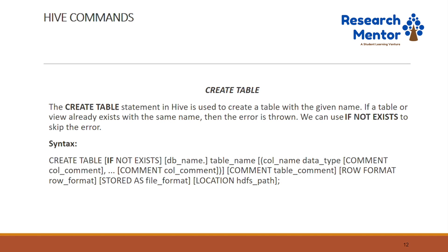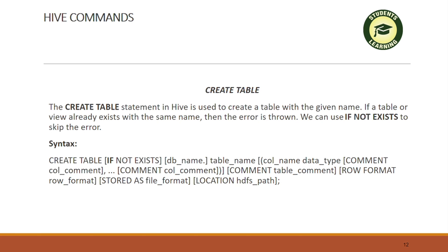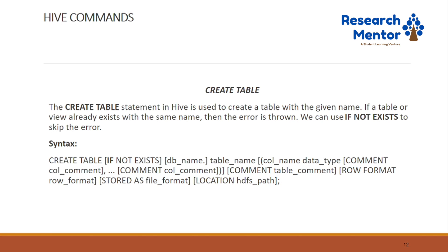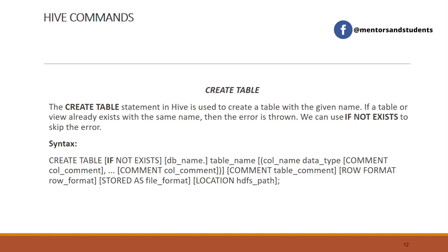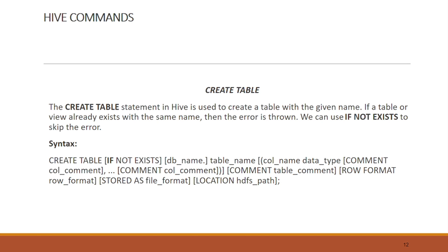The next command is create table command. Create table in Hive is basically used to create a table with a given name. If a table or view already exists with the same name, it shows an error — so we use IF NOT EXISTS to skip the error. The syntax is: CREATE TABLE IF NOT EXISTS db_name.table_name, then column_name with data type and optional comment. You can add multiple columns, and optionally use STORED AS file_format or LOCATION as HDFS file path.